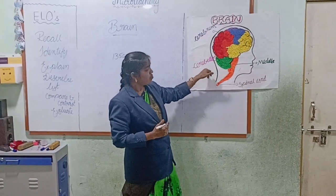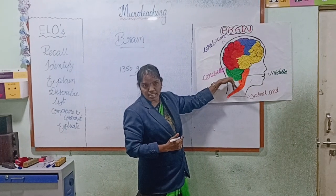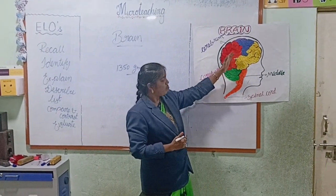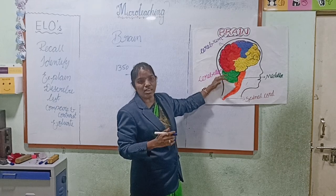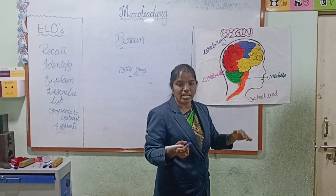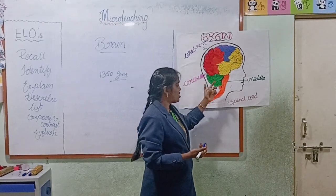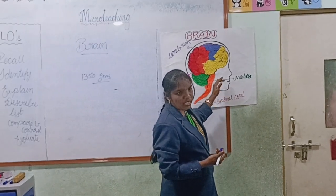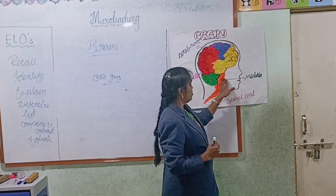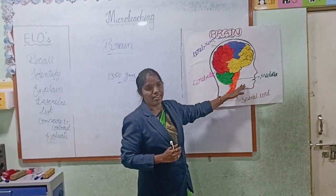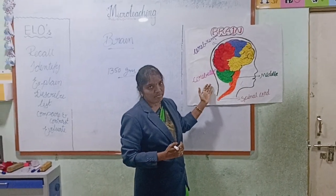The next part is the cerebellum. This cerebellum is structured under the cerebrum. It controls all the muscles — dancing, walking, running, working — whatever actions you have to do. These actions are controlled by the cerebellum. Next one is the medulla. This medulla is located between the cerebrum and the cerebellum. The medulla coordinates all the muscular and cardiac muscle functions between the cerebrum and the cerebellum.